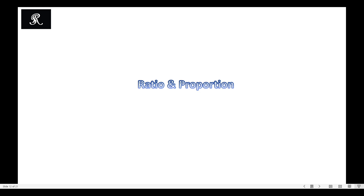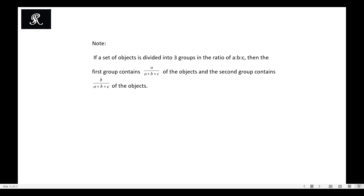Assalamualaikum. This video is about ratio and proportion, and this is the second video of the series. Here we will discuss a few problems. If a set of objects is divided into three groups in the ratio a:b:c, then the first group contains a/(a+b+c) of the objects, the second group contains b/(a+b+c), and the third group contains c/(a+b+c).